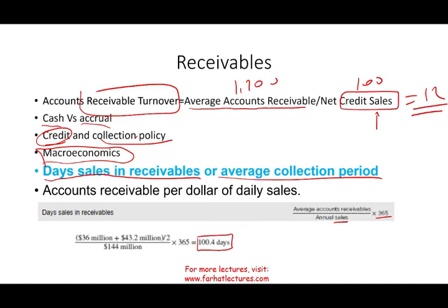Is 100 days good or bad? We don't really know without comparing to the industry. If the industry average is 60 days, that looks concerning — but it's not necessarily bad. For example, if you intentionally sell to less credit-worthy customers to increase your market share, a longer collection period may be acceptable. Generally, you don't want to be too far from the industry average unless you have a clear strategic reason for it.